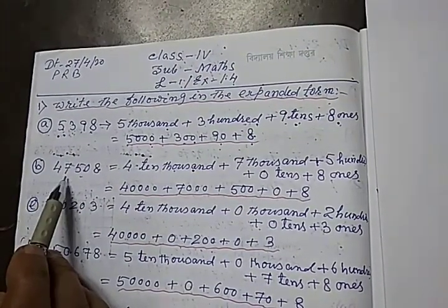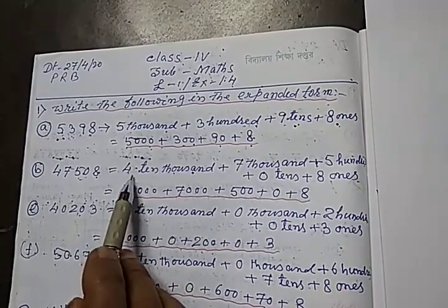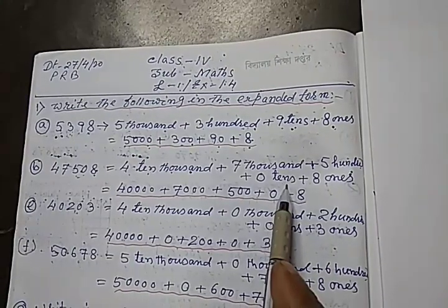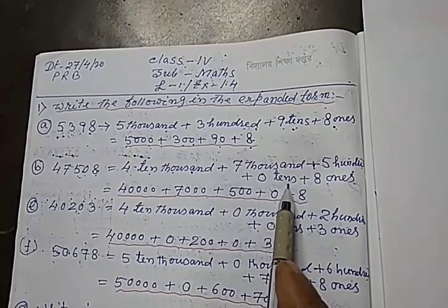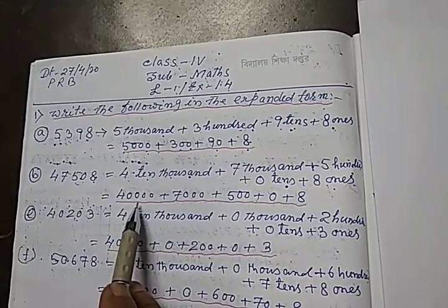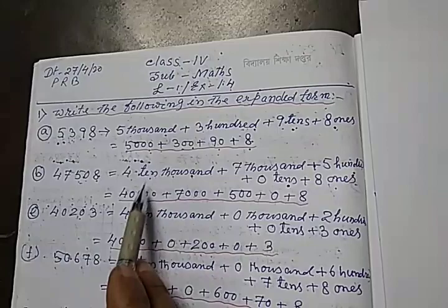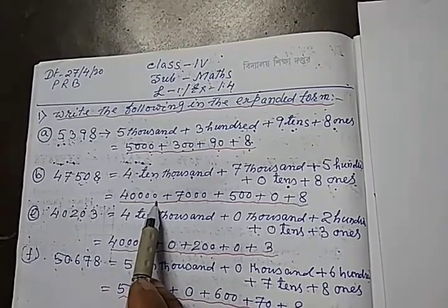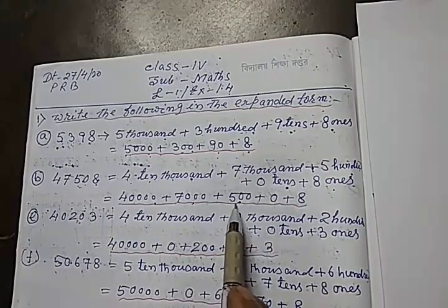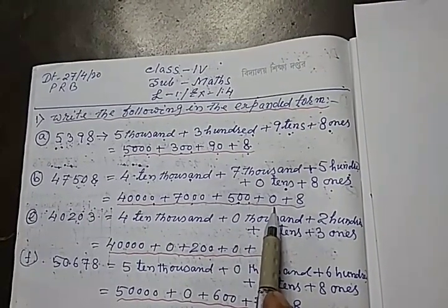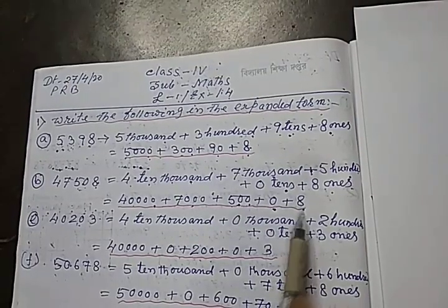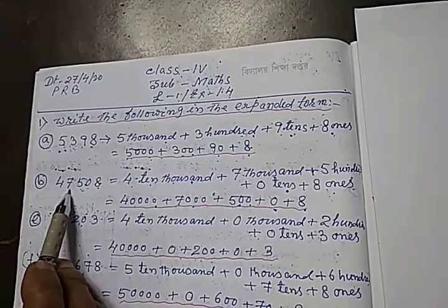Similarly, this number is 47,508. First write in words: 4 ten-thousands plus 7 thousands, with 0 in the tens place, and 8 ones. Now write in numerals as per place value: 4 multiplied by 10,000 gives 40,000; 7 multiplied by 1,000 gives 7,000; 5 multiplied by 100 gives 500; 0 into 10 gives 0; and 8 ones. So this is the exponent form of 47,508.